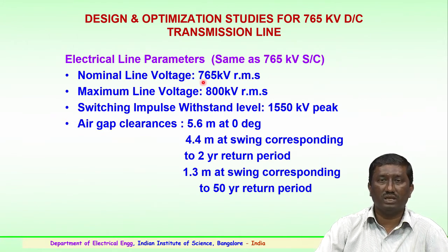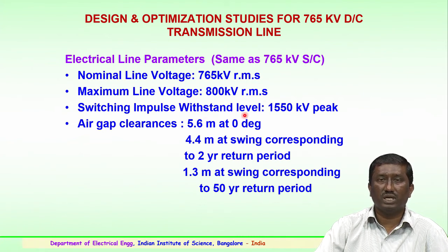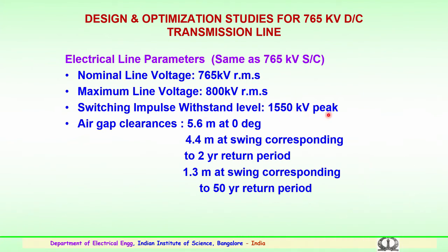The nominal voltage was 765 kV and maximum operating voltage was 800 kV. Switching surge similar to single circuit was 1550 kV peak. Air gap clearances were 5.6 meters at 0 degrees, 4.4 meters at swing corresponding to a 2-year return period, and 1.3 meters at swing corresponding to a 50-year return period.